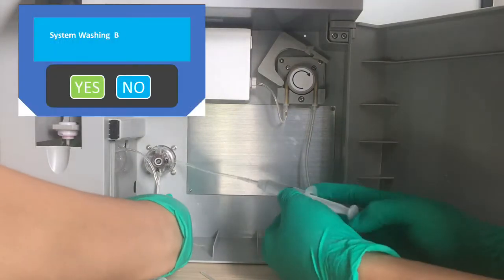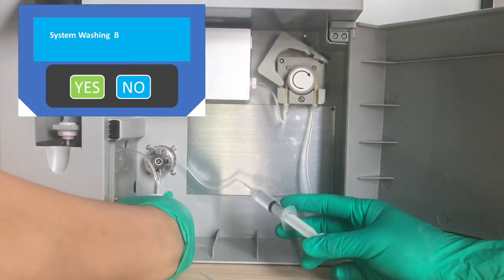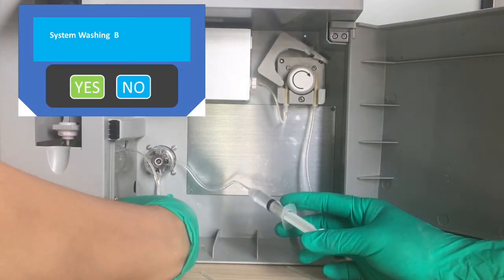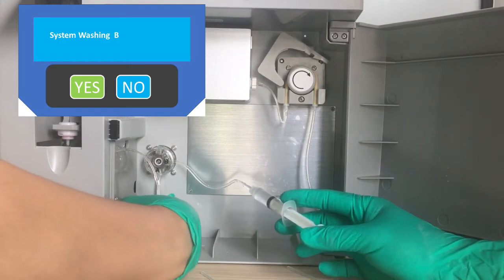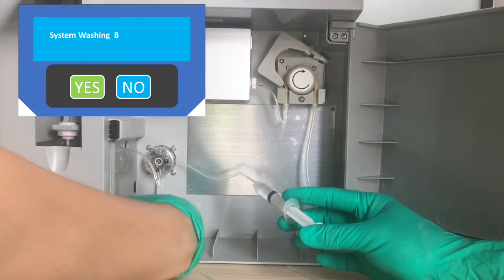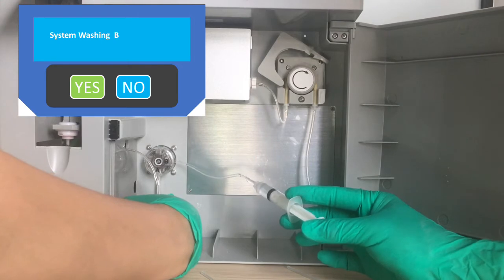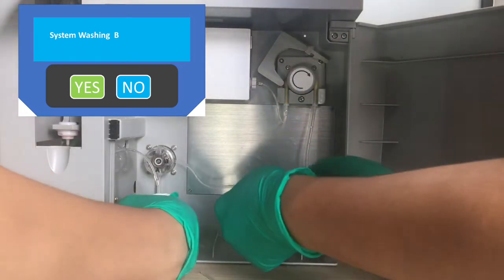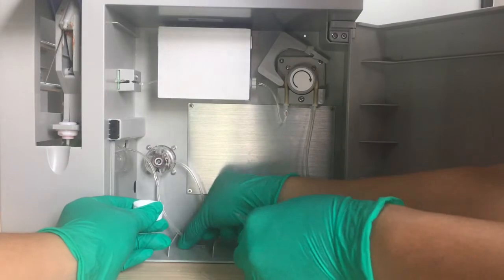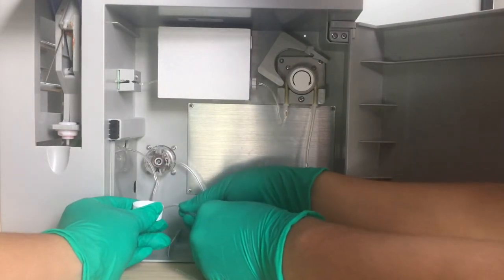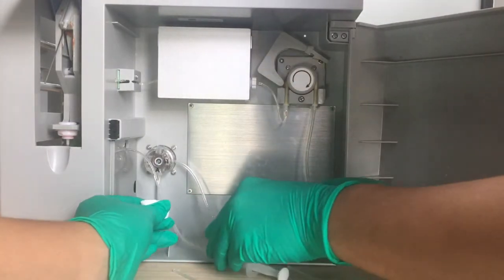Then we can switch on the machine. If there is a system washing for B channel, then we can inject water. It should come out from the center of the distribution. If there's water, this part is smooth.